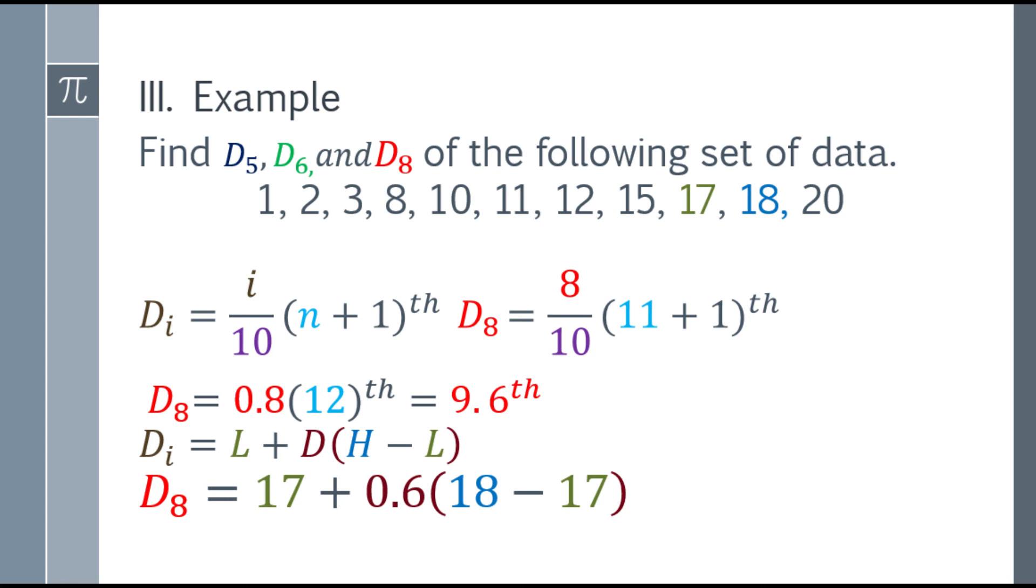Again, when getting the higher number and lower number, it's not directly the rounded down and rounded up values. We round down and round up to get the order of the number. So, 9.6 rounded down is 9, and rounded up is 10. That's the order of the number. So, because 9.6 rounded down is 9, the 9th number is 17. We base it on that. So, the decimal here will be 0.6.